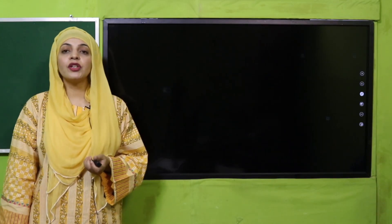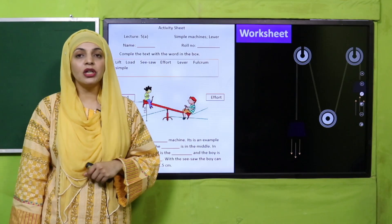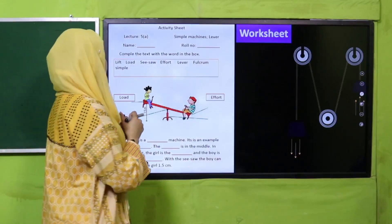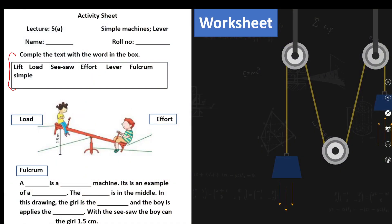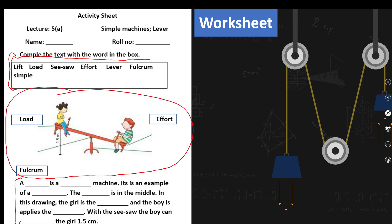For practice, download the worksheet from the description box below this video, or get it in print form from your teacher. Write your name on the worksheet and then start. There is a word bank — complete the text using the words in the box. A picture of a seesaw is provided as an example. Fill in the blanks: 'A blank is a blank machine' — a lever is a simple machine — 'and it is an example of blank' — it is an example of a seesaw.